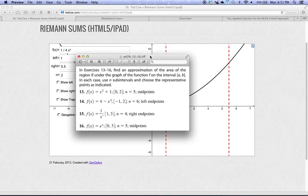On page 429, numbers 13 through 16, we are asked to do an approximation for the area under a graph, and I'm going to focus on number 15 for my example.